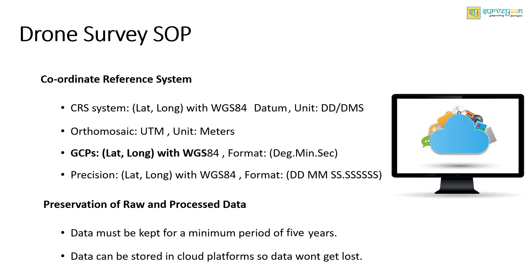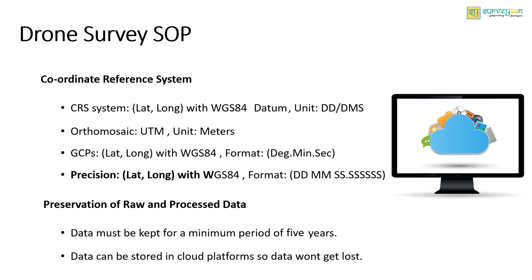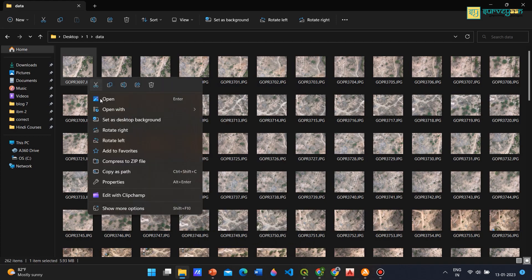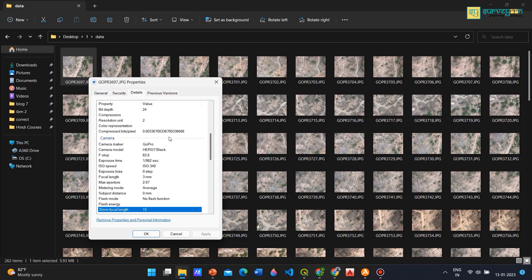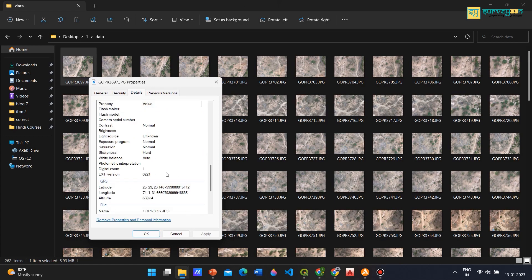The GCPs and the boundary pillar coordinates should be in latitude/longitude with WGS84 datum, and the unit should be in degrees, minutes, seconds. Finally, the precision of the data should be in latitude/longitude with WGS84 datum, the format should be in degrees, minutes, seconds, and the seconds should have precision up to six digits. Let me show you what that means.